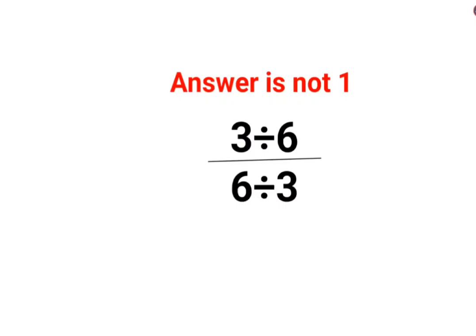Welcome everyone. So yes, a lot of people thought the answer for this one is supposed to be 1, because it was so easy, right? This is what — 3 and 3 cancel, 6 and 6 cancel, you get 1 upon 1, answer is 1.